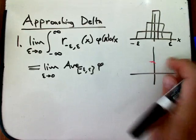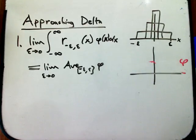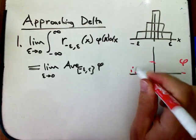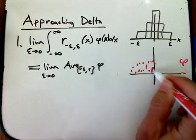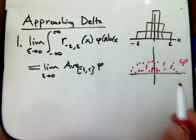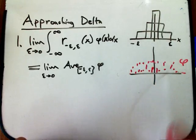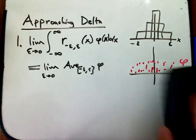But if phi, instead of being some nice continuous function, was maybe like random values assigned to every real number, for example, then there's no reason those averages are going to converge to anything, much less something that's really appropriate.